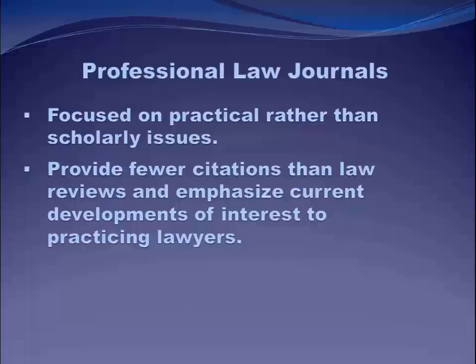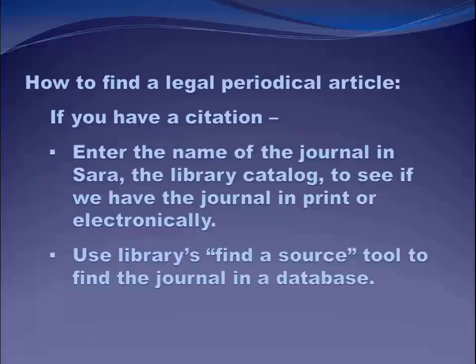How do you find legal periodical articles? It's very easy if you have the citation — it gives you the article title, the volume, the journal name, and the page number. If you have all of that, you can enter the name of the journal in SARA, our library catalog, and it'll tell you right away if we have that journal available in print or electronically. You can also use the library's find-a-source tool, which is probably the better place to go if you have a journal title — it'll tell you all the different databases that carry that journal. Here's what it looks like.